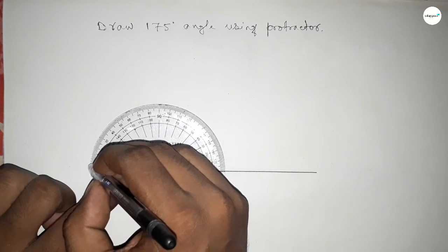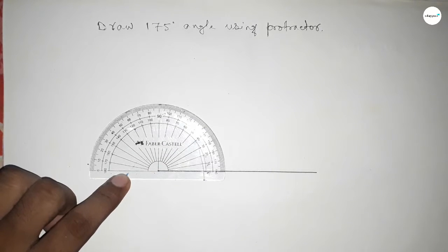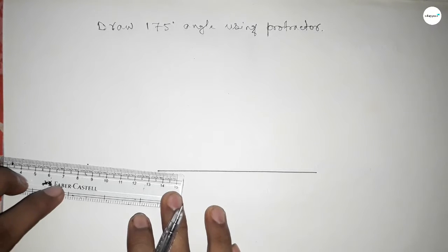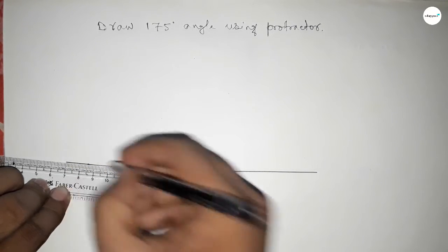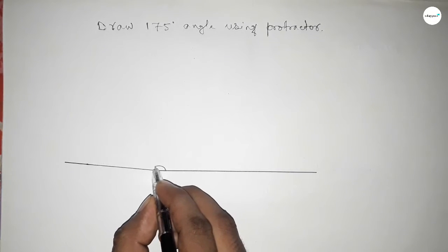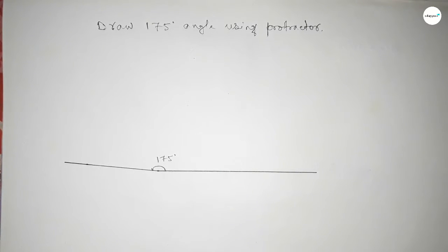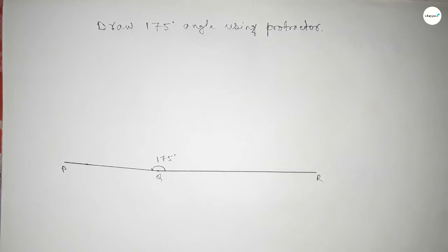Now joining this to get 175 degree angle. So this is 175 degree angle by joining this. So this is 175 degrees and this is P, Q, and R.